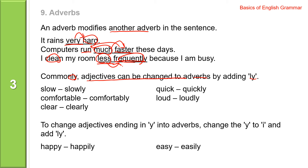Commonly, adjectives can be changed to adverbs by adding -ly: slow→slowly, quick→quickly, comfortable→comfortably, loud→loudly, clear→clearly. To change adjectives ending in 'y', change the 'y' to 'i' and add -ly: happy→happily, easy→easily.